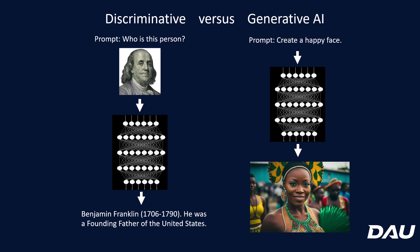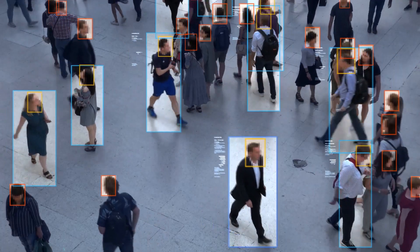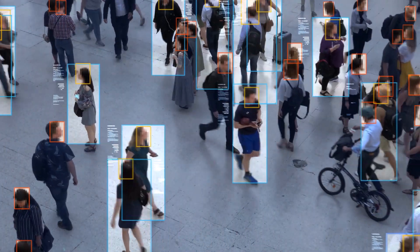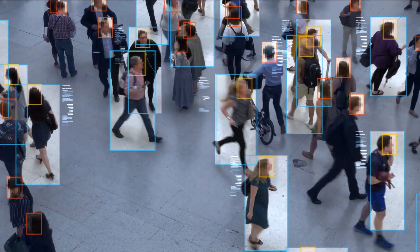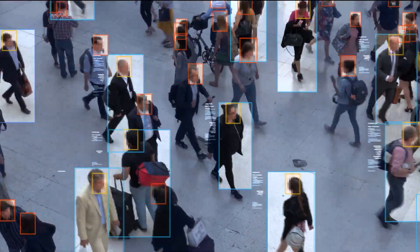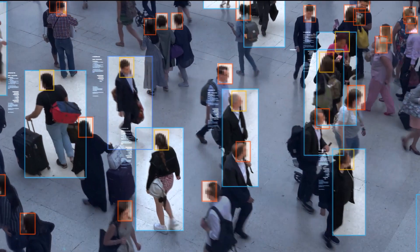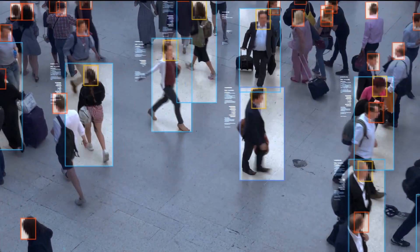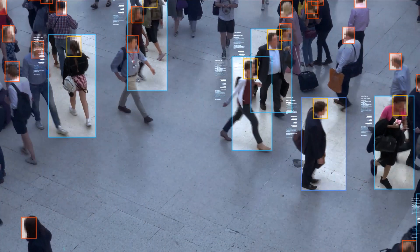You can see many different applications for both of these types of AI systems. An extreme use case of the discriminative side would be identifying population members. If you saw the PBS Frontline episode In the Age of AI, they said China is using this to keep track of their population — certainly a very advanced use case for discriminative AI.